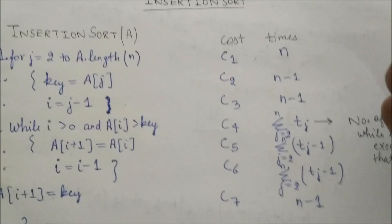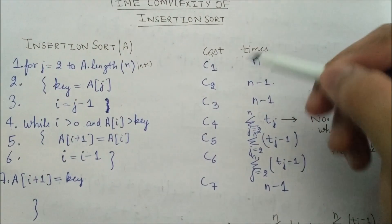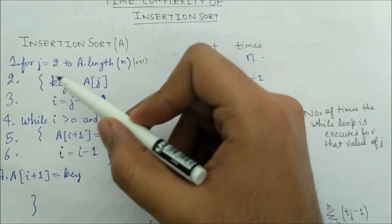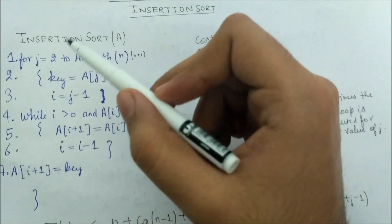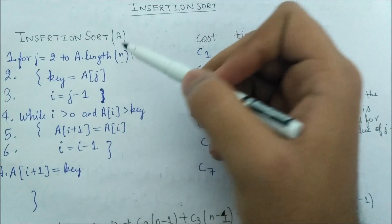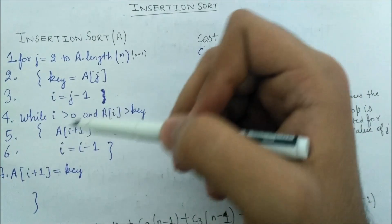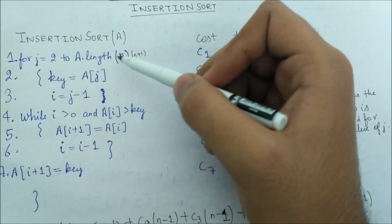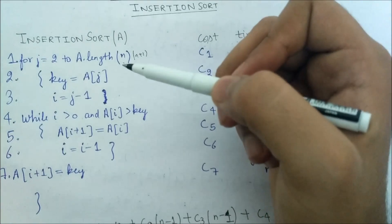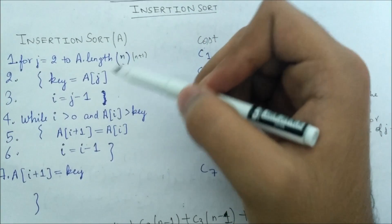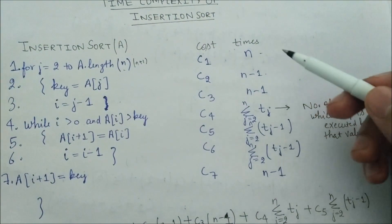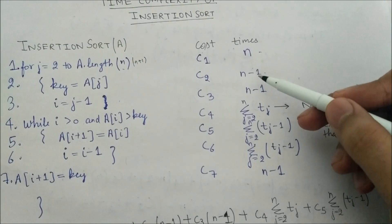Line 1 is executed n times — not n−1, even though j runs from 2 to n. With a for loop or while loop, the condition check executes one extra time: it runs until j = n+1, at which point it determines the condition is not met and exits. So line 1 runs n times, while line 2 and line 3 each run n−1 times.